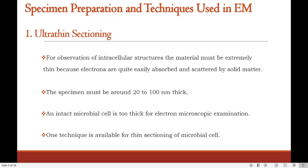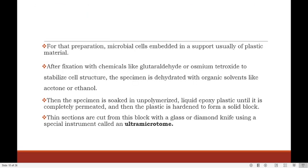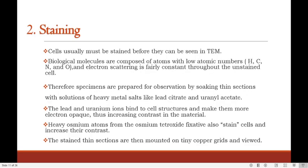An intact microbial cell is too thick for electron microscopic examination, so thin sectioning of microbial cells is used. Microbial cells are embedded in a support, usually plastic material. After fixation with chemicals like glutaraldehyde or osmium tetroxide to stabilize cell structure, the specimen is dehydrated with organic solvents like acetone or ethanol. Then the specimen is soaked in unpolymerized liquid epoxy plastic until completely permeated, and the plastic is hardened into a solid block. Thin sections are cut from this block with a glass or diamond knife using a special instrument called ultra-microtome.